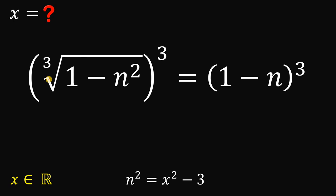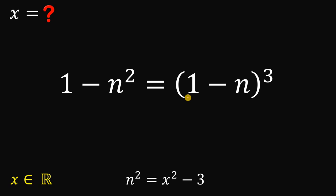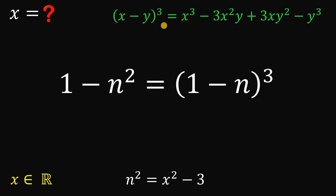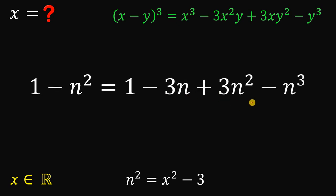The left-hand side becomes 1 minus n squared. On the right-hand side, we expand (1 minus n) cubed using the identity (x minus y)³ = x³ minus 3x²y plus 3xy² minus y³, where x equals 1 and y equals n. This simplifies the right-hand side to 1 minus 3n plus 3n squared minus n cubed.